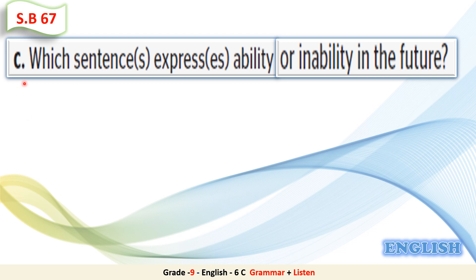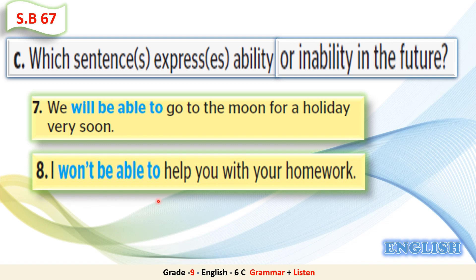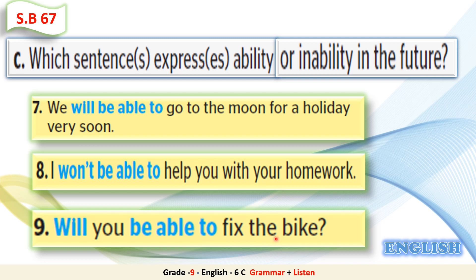Now let's go to Question C: Which sentences express ability or inability in the future? Sentence 7 – 'We will be able to go to the moon for a holiday very soon' – uses 'will be able to' plus infinitive for future ability. Sentence 8 – 'I won't be able to help you with your homework' – uses 'won't be able to' for inability in the future. Sentence 9 – 'Will you be able to fix the bike?' is the question form. So we use 'will be able to' or 'won't be able to' to express ability or inability in the future.